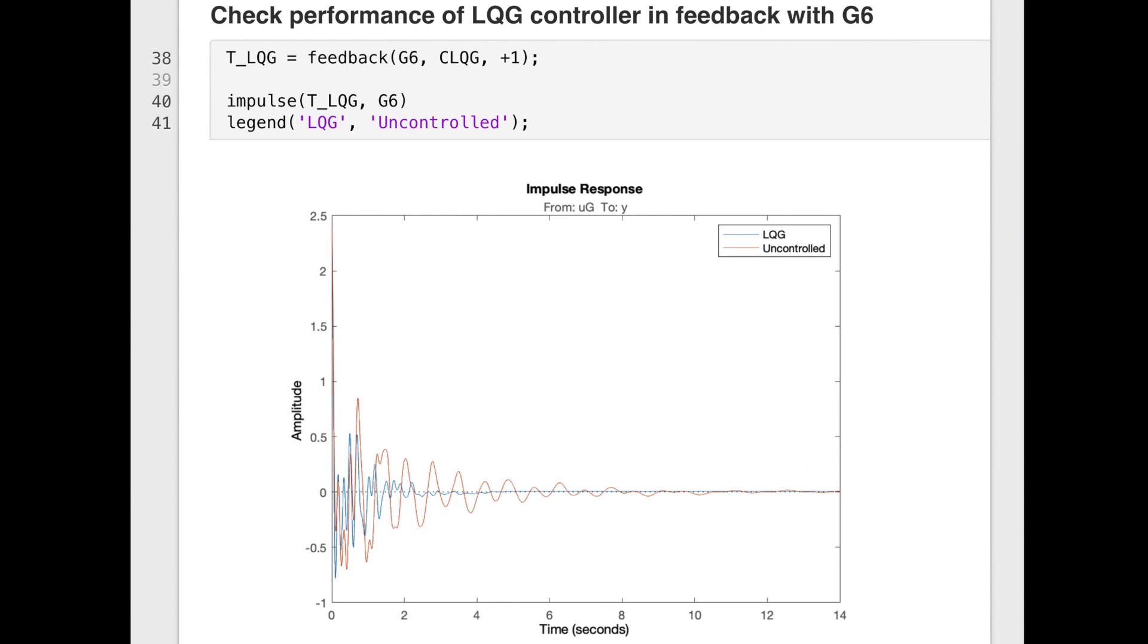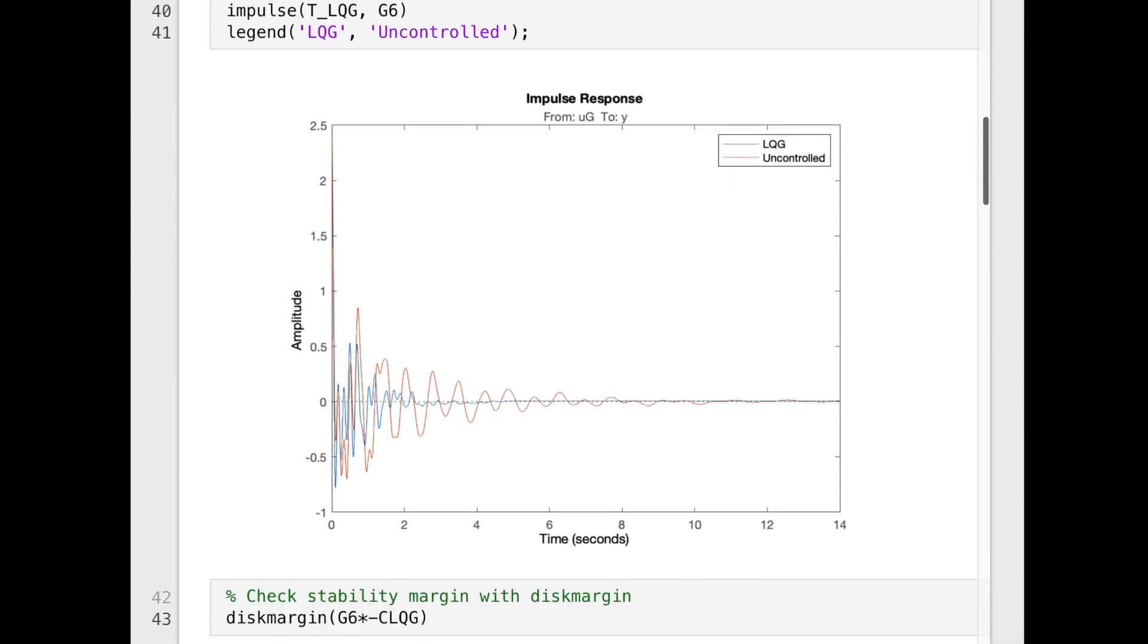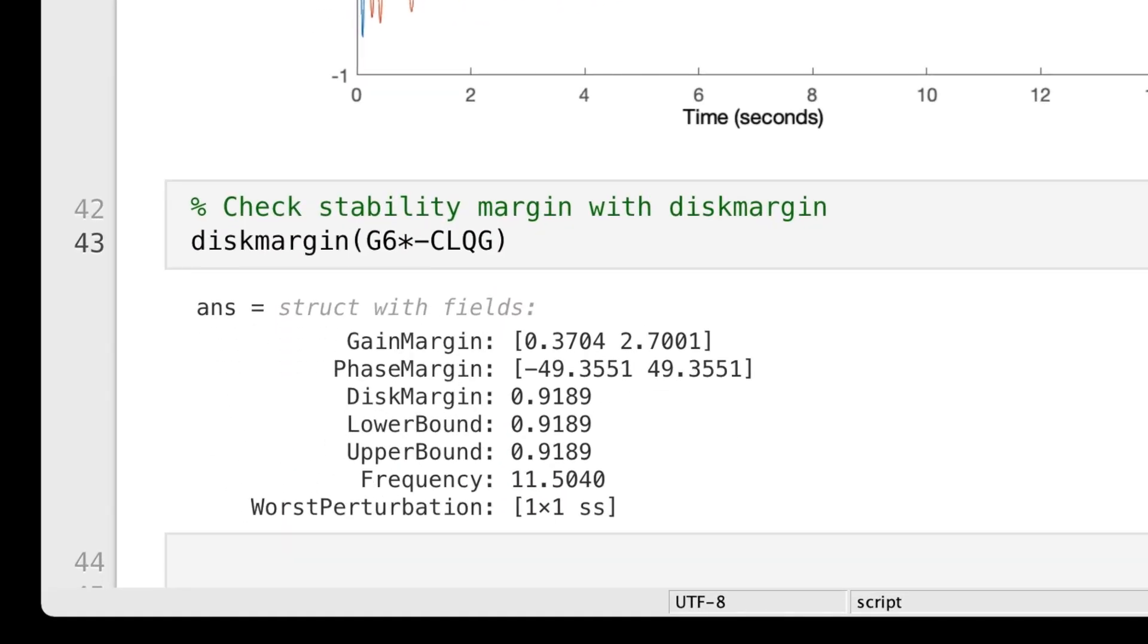I'm placing the existing LQG controller in feedback with this higher fidelity model and seeing how well it performs. Check this out. The impulse response is actually still really good. It appears as though the performance hasn't really been impacted too much by adding in the additional four modes. But if we check the disk margin for this system, you'll see that it tells a different story. We lost a significant amount of margin in the design by adding in that additional fidelity.